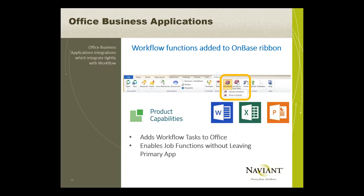New workflow functions have been added to the OnBase ribbon, including the ability to execute workflow on a particular document and show the document in queue in the full Unity workflow interface. This feature was added across all three Office versions — 2007, 2010, and 2013 — and across all three Office Business Applications: Word, Excel, and PowerPoint. When working on an Office document that is part of a larger business process like policy administration or contract management, users can finish composing or editing the document and send it forward for review and approval directly from the Office application.